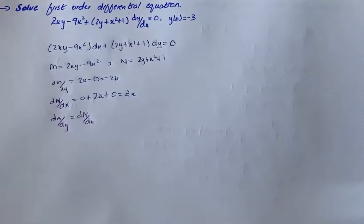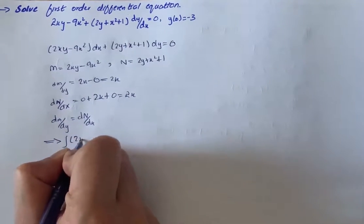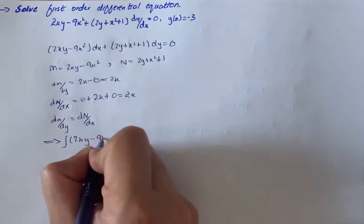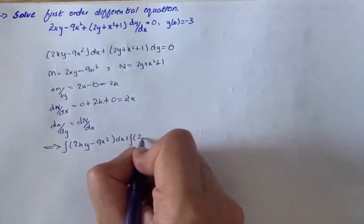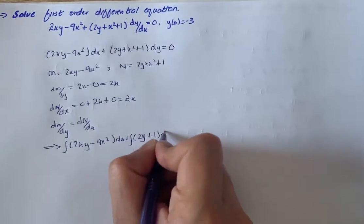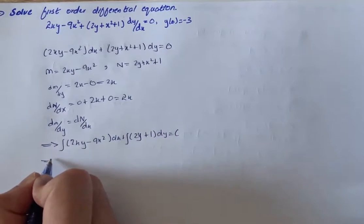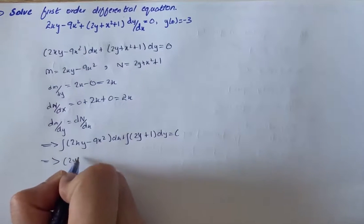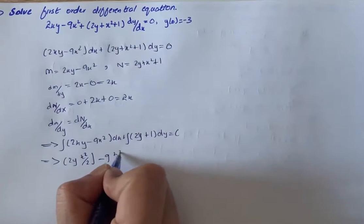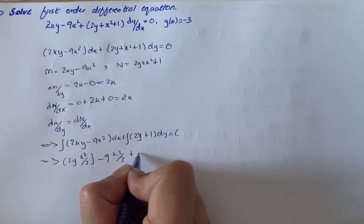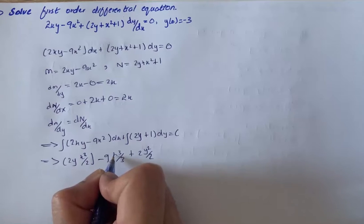Now we put it into the solution form. We integrate (2xy minus 9x squared) dx plus (2y plus 1) dy, which equals C. We get 2y times x squared over 2, then 9 times x cubed over 3, plus 2 times y squared.